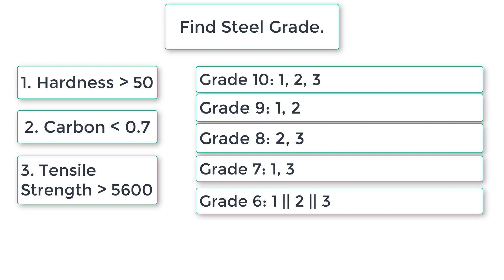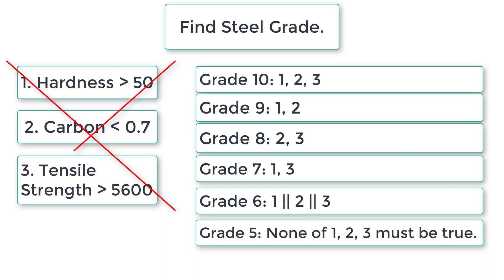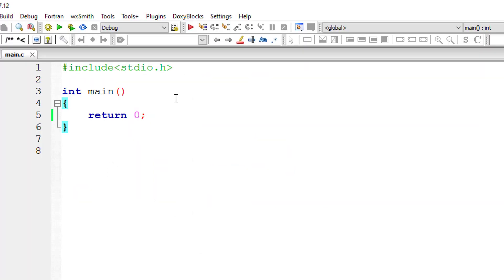For grade 5, none of these conditions should be true: hardness must not be greater than 50 (it should be less than 50), carbon content must be greater than 0.7, and tensile strength must be less than 5600. With these things in mind, let's write the C program.